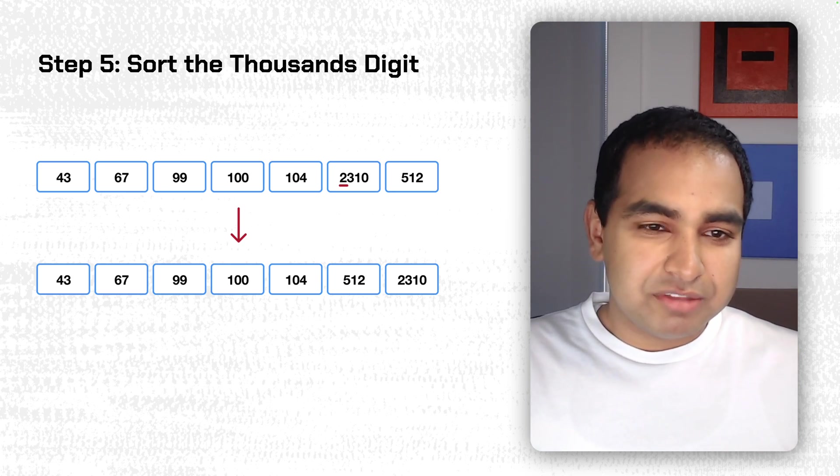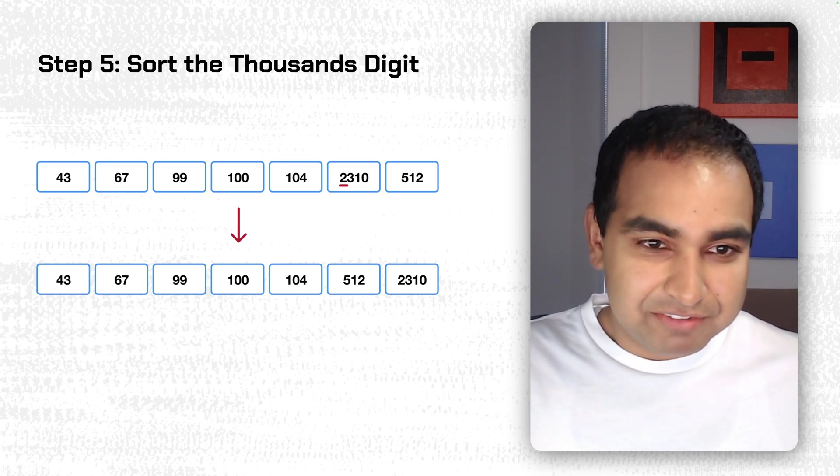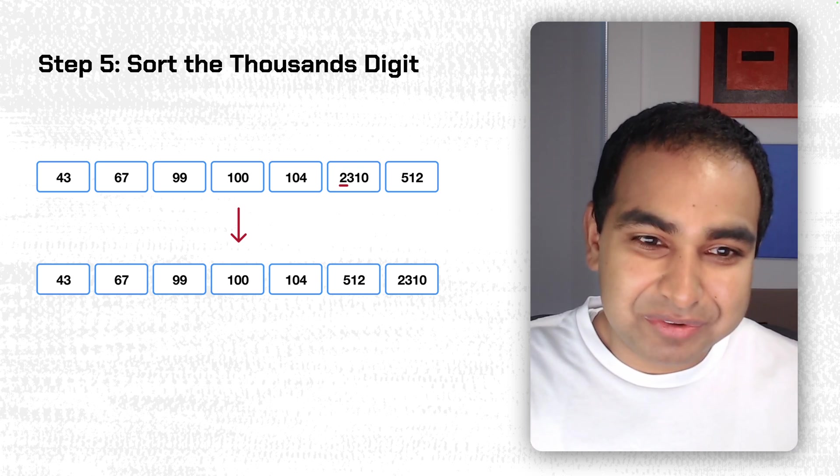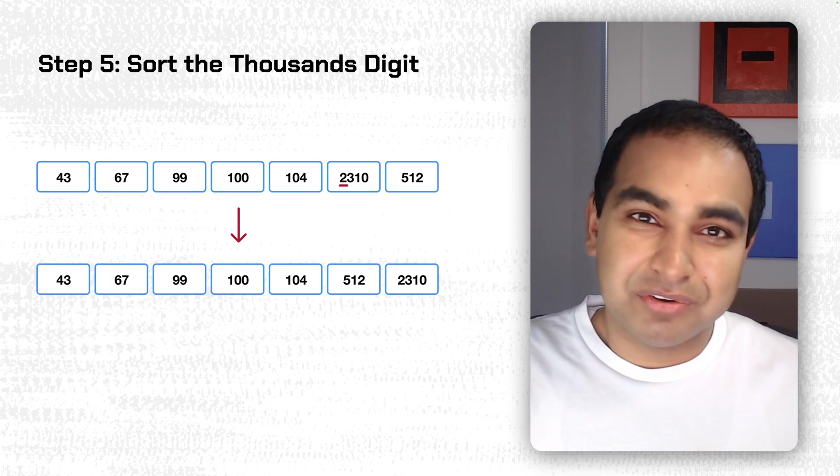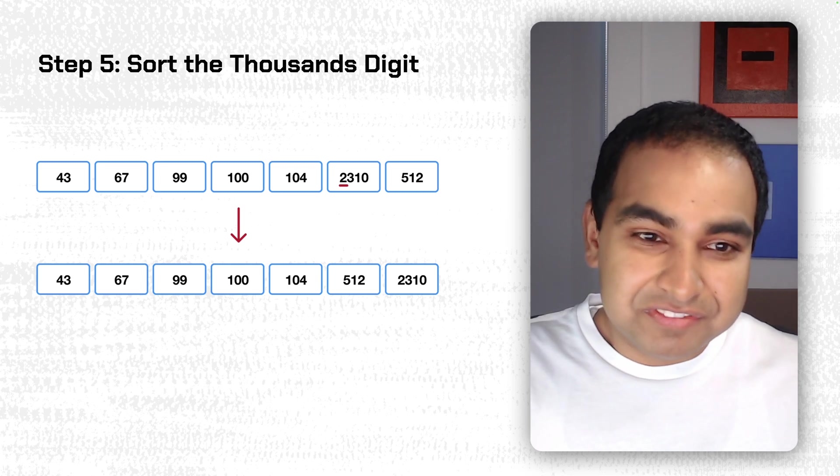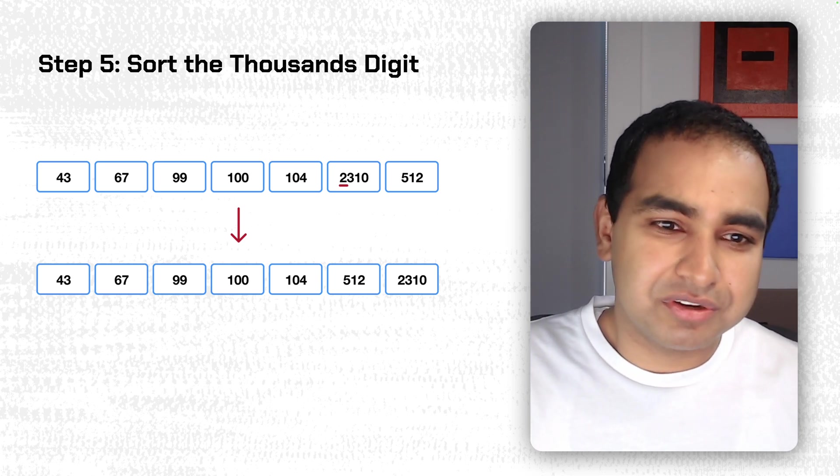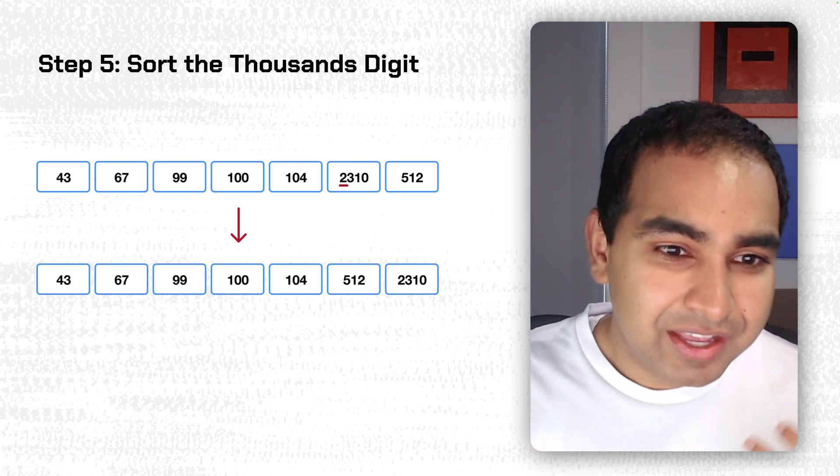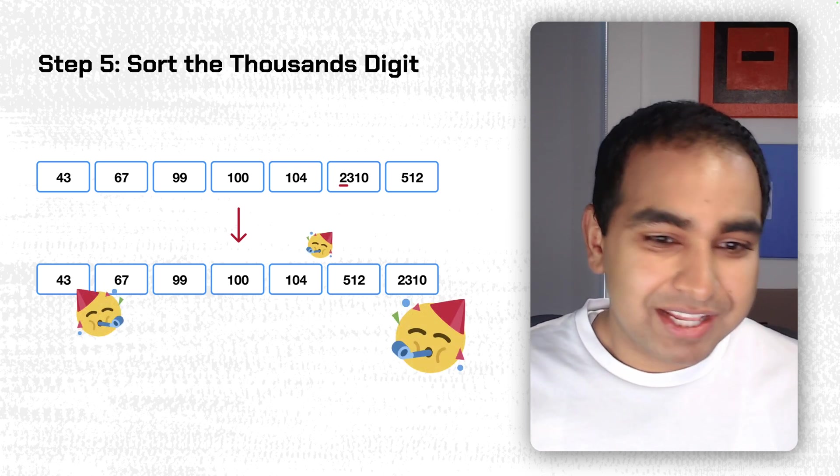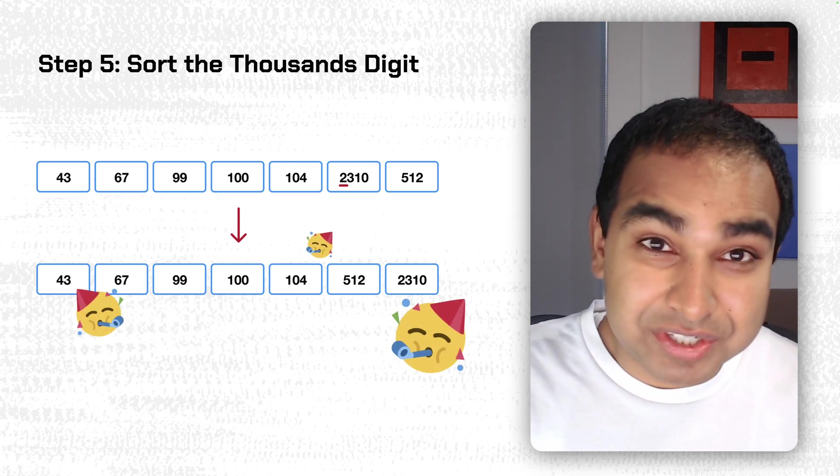Now, the next step would really be to sort by the next significant digit, but there isn't one anymore, because the largest value is 2310, which means there are only four digits. So there is no fifth or sixth values for us to go through, which means we're done sorting. In which case, if we look at the array that we have here, the final output is, in fact, a sorted array.